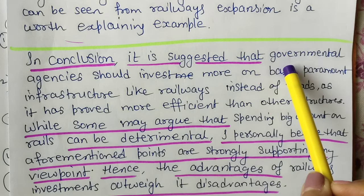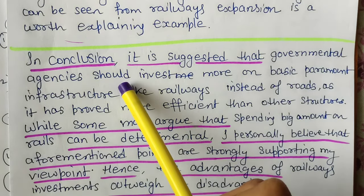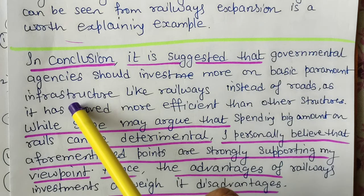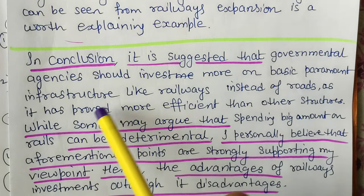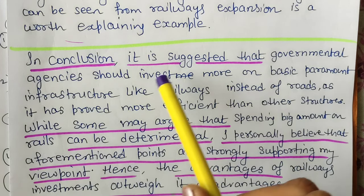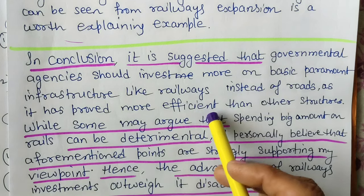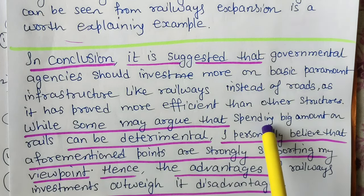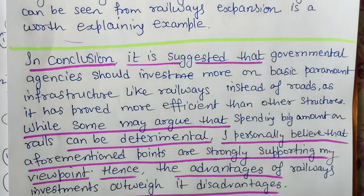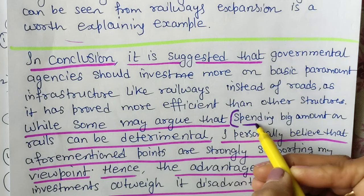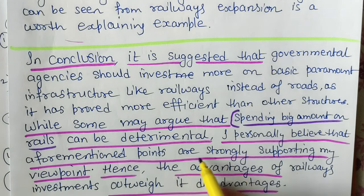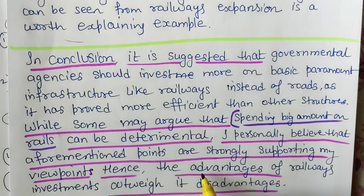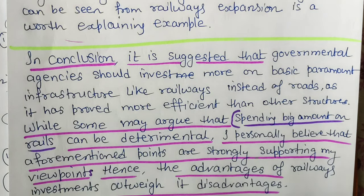In conclusion: 'It is suggested that government agencies should invest more on basic paramount infrastructure like railways instead of roads, as it has proved more efficient than other structures. While some may argue that spending a big amount on rails can be detrimental, I personally believe that the aforementioned points are strongly supporting my viewpoints, hence the advantages of railways investment outweigh its disadvantages.' It is so simple to write an essay with the help of this template.